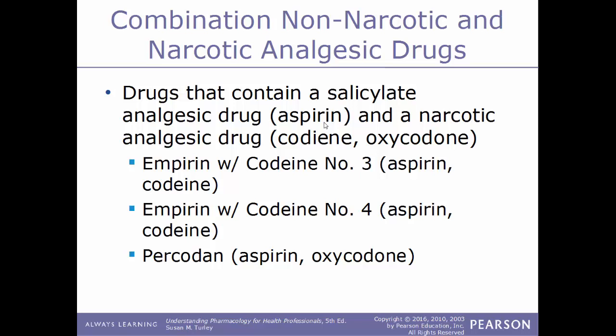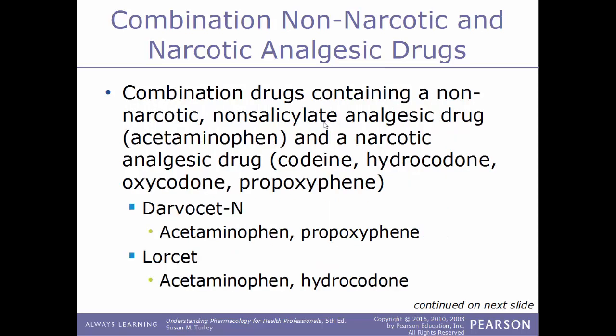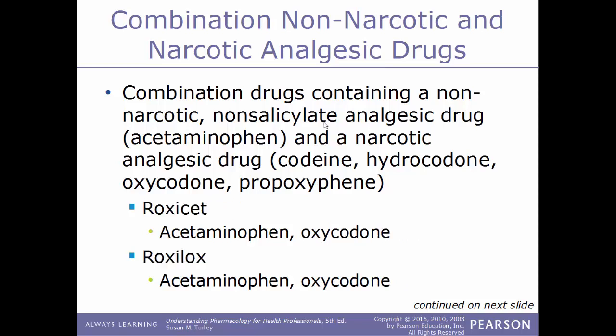Some combinations of non-narcotic and narcotic analgesic drugs contain a salicylate analgesic like aspirin and a narcotic like codeine or oxycodone. Examples include Empirin with codeine number three, which is a combination of aspirin and codeine; Empirin with codeine number four, also aspirin and codeine; and Percodan, which is a combination of aspirin and oxycodone. Another possible combination contains a non-salicylate analgesic drug like acetaminophen plus a narcotic like codeine, hydrocodone, oxycodone, or propoxyphene. Examples include Darvocet-N, a combination of acetaminophen and propoxyphene; Lorcet, a combination of acetaminophen and hydrocodone; Lortab, a combination of acetaminophen and hydrocodone; Percocet, a combination of acetaminophen and oxycodone; Roxicet and Roxilox, both combinations of acetaminophen and oxycodone.